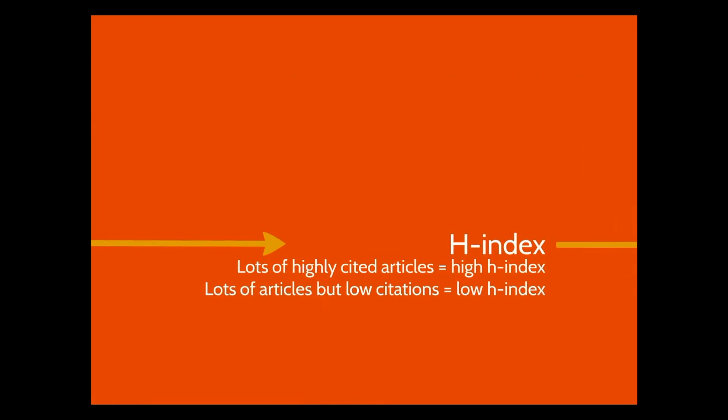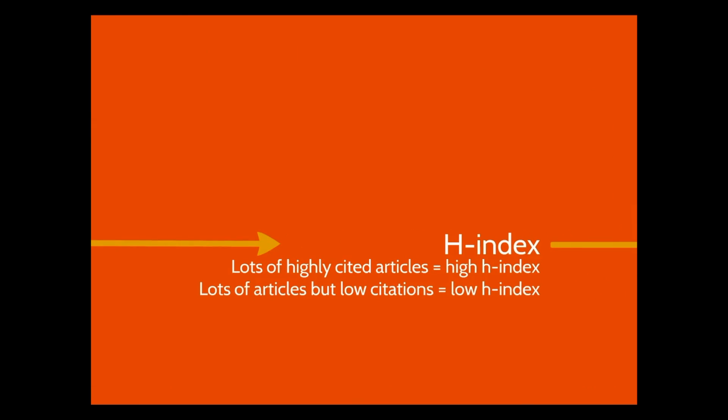A person's h-index measures how consistently their work is cited. If an author has written a lot of articles and they have all been highly cited, their h-index will be high. If they haven't published many articles, or if they have published a lot but haven't received many citations, their h-index will be lower.